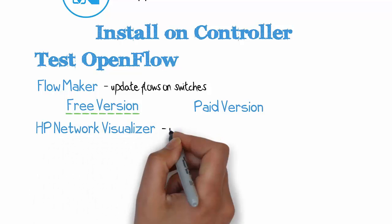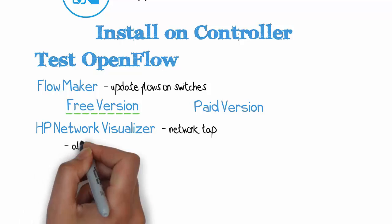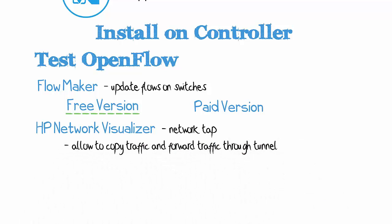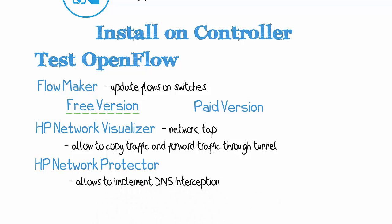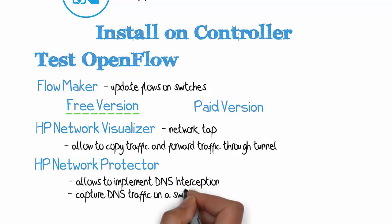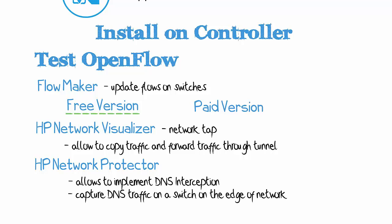The HP Network Visualizer application is a network tap that allows you to copy traffic from a host or a subnet and forward that traffic through a tunnel to a Wireshark device anywhere in your network, including onto a non-OpenFlow network. The HP Network Protector application allows you to implement a DNS interception on switches running OpenFlow — you can capture DNS traffic on a switch at the edge of your network and have that switch intercept DNS traffic and forward it to a central station for higher-layer analysis. For example, you could stop a user from going to a malicious website while allowing them to go to a legitimate one.